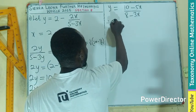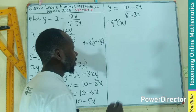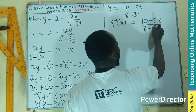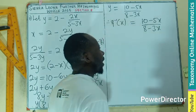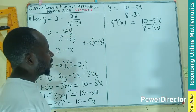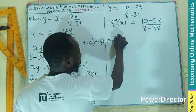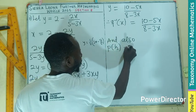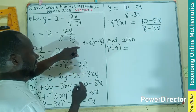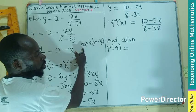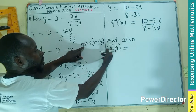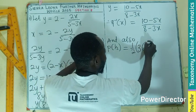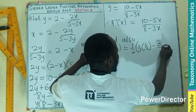Therefore, Q prime, which is the inverse, is nothing but ten minus five X divided by eight minus three X. So we know the inverse now. What we need is to find P of half. Meaning, this is the P of X. In place of X, I put in half. So I should be having one-half multiplying three multiplying one-half minus two-fifths.